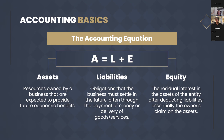Liabilities are obligations that the business must settle in the future, often through the payment of money or delivery of goods or service — things like loans, accounts payable, and mortgages. Think of something you would owe money on. And equity, which is an important piece as it pertains to this project, is the residual interest in the assets of the entity after deducting liabilities — essentially what the owner's claim on the assets is. These are things like owner's capital and retained earnings.